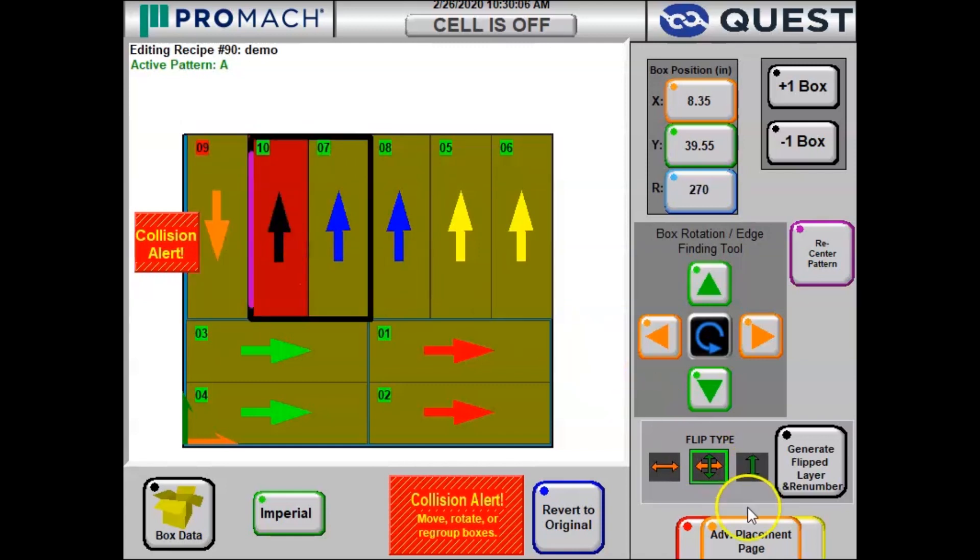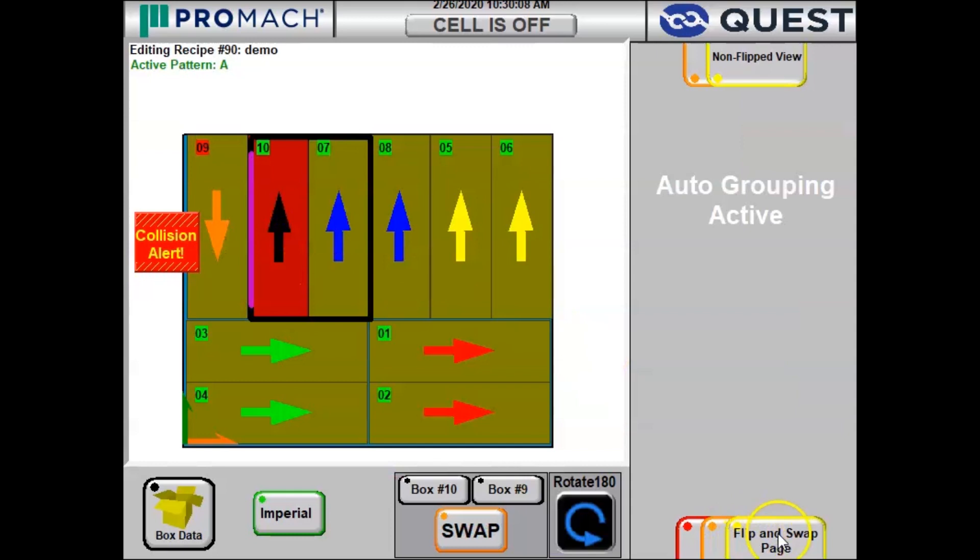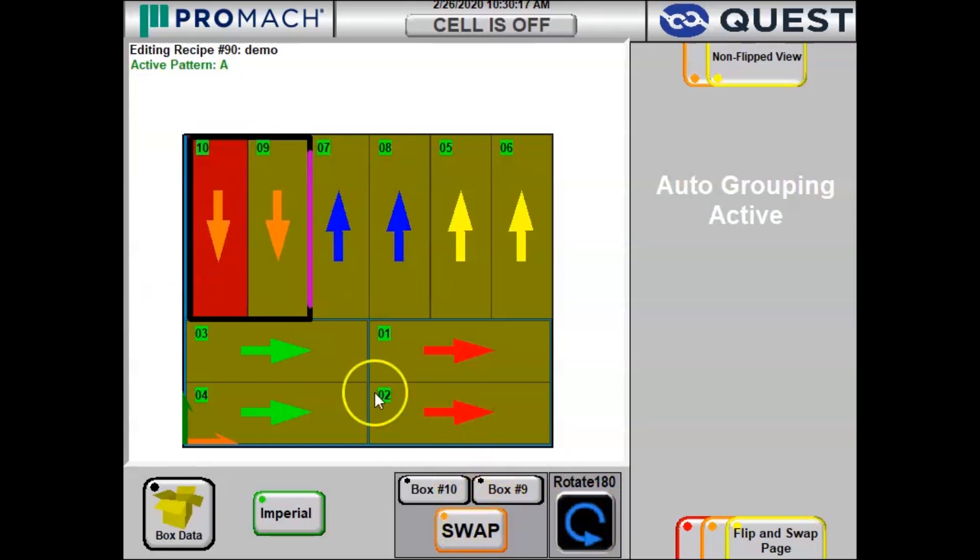We're going to spin box 10 around and that's close. But now we need to swap the order because the box on the purple edge of the gripper, that has dropped first. So now these boxes are going to be picked up at the same time and dropped at the same time.